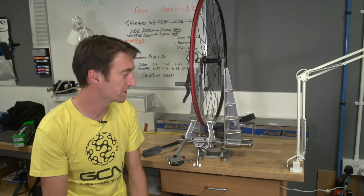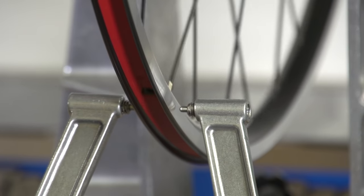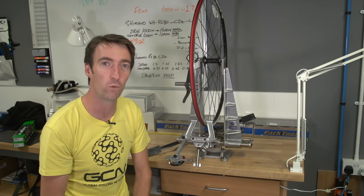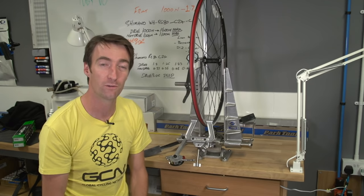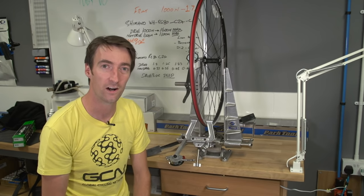The advantage of a wheel-truing stand is this point here. It allows you to very easily see and hear exactly where the rim is warped. You can do the same thing with a wheel inside the frame or forks using the brake pads, but of course, it's much harder to be accurate and it'll make the job overall a lot harder as well.